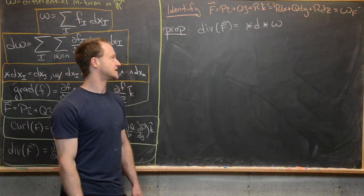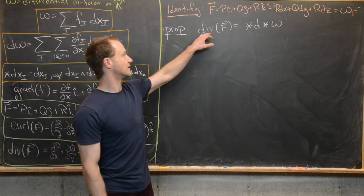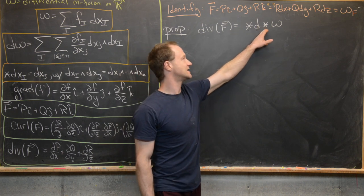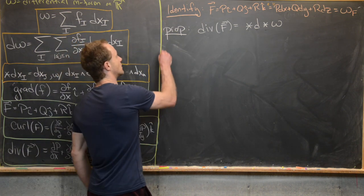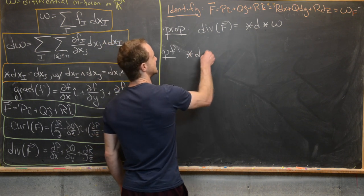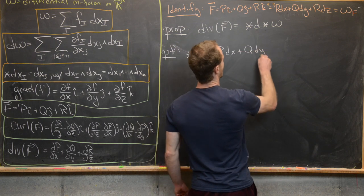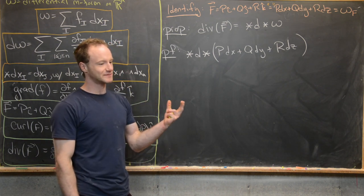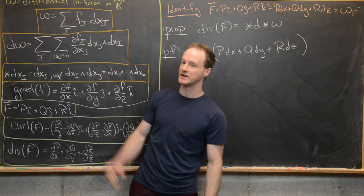Now we're ready to look at how the divergence of a vector field relates to the exterior derivative and Hodge operator. The divergence of F equals ★d★(ω_F). Let's sketch the proof starting from the right-hand side: ★d★(P dx + Q dy + R dz). Recall that the star of a one-form is a two-form, so that when you wedge them together you get the volume three-form dx ∧ dy ∧ dz.